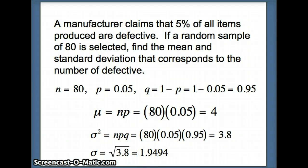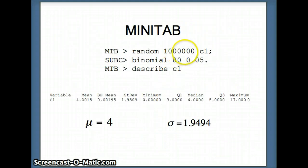And how are we going to check this? We're going to check this on Minitab. So we say random 1 million C1, binomial with 80 trials, probability of success on a given trial is 0.05. We want to look at the descriptive statistics for this data set. You'll notice we have a mean of 4.0015 for my million items, but my theoretical mean was 4.00. Those numbers are very close. The standard deviation for my million items, 1.9509. The theoretical standard deviation based on the work we did on the previous slide, 1.9494.